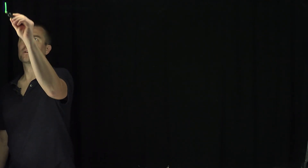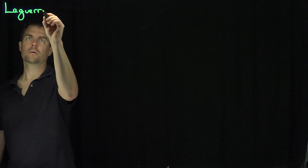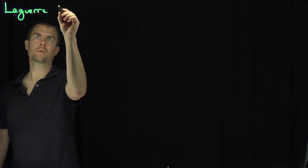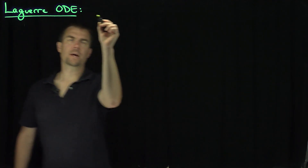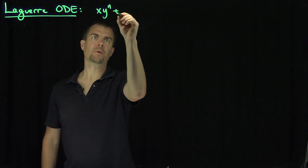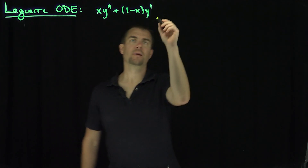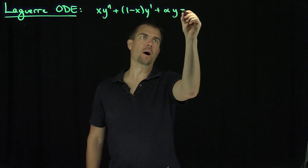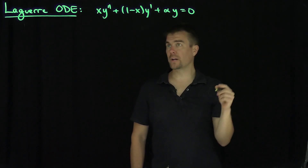Hello students. In this video we'll discuss the Laguerre differential equation. The Laguerre differential equation has the form xy double prime plus 1 minus x y prime plus alpha y is equal to 0.